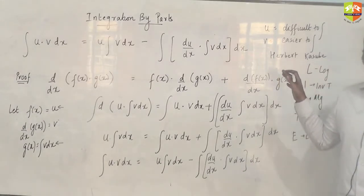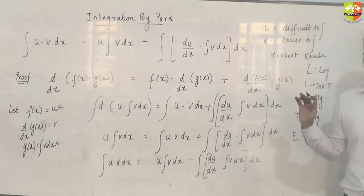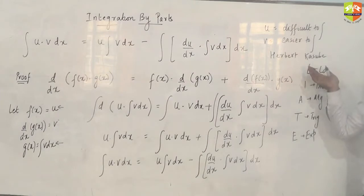This guy told in this article written in 1994 that the higher the function in this particular rule, that function has to be chosen as u. The lower the function in this mnemonic, that function has to be chosen as V. So according to him, logarithmic functions and inverse trigonometric functions are the most difficult ones to integrate. As you would realize, we haven't yet talked about log function integration or sin inverse x, tan inverse x, sec inverse x integration so far.